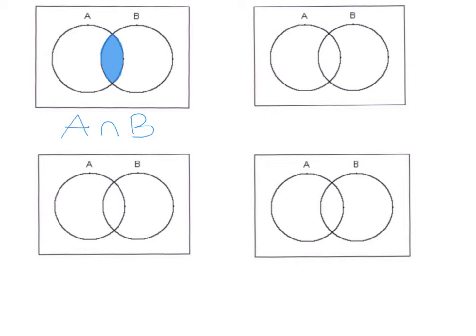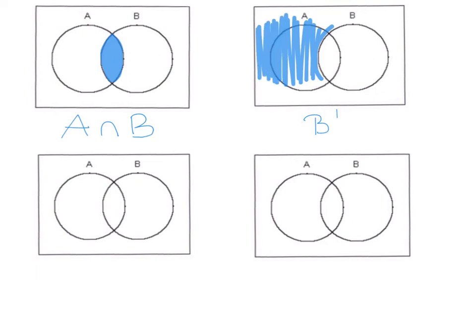The next one: B complement. What does it mean? B complement means everything outside B — everything but not in B. As you can see, we have set B here, so everything outside B. It's not only set A but everything in the universe outside B.